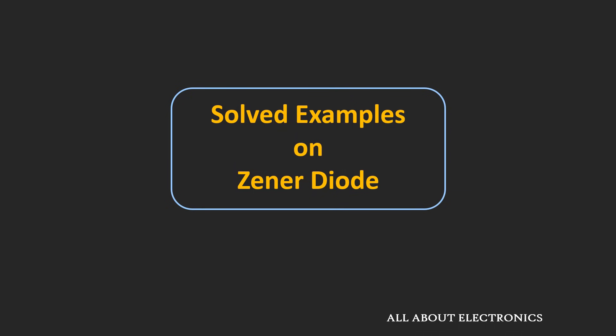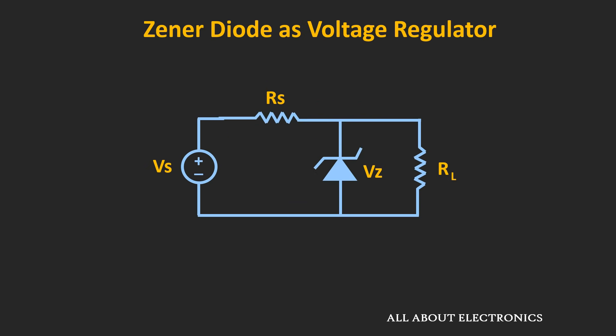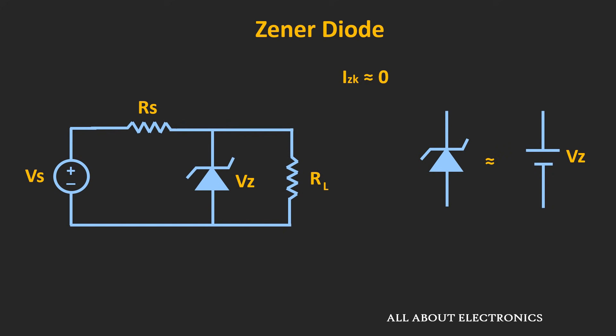Hey friends, welcome to the YouTube channel all about electronics. In the previous video, we saw what a Zener diode is and how it can be used as a voltage regulator, along with a few examples. But in those examples, we assumed that the Zener diode is ideal — meaning that in the breakdown region, the Zener resistance is zero, and the Zener knee current is negligible.